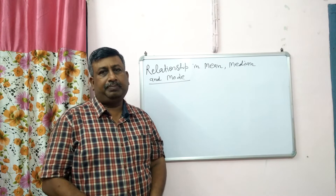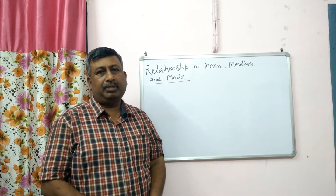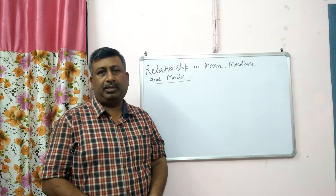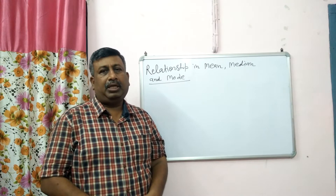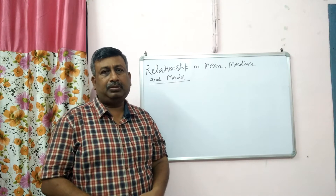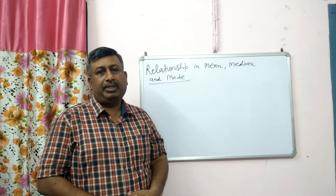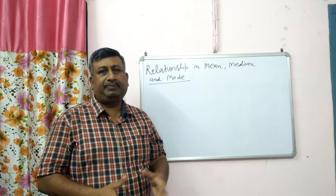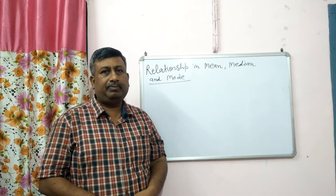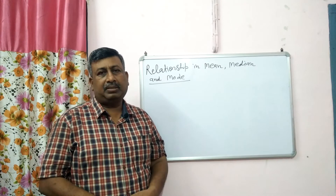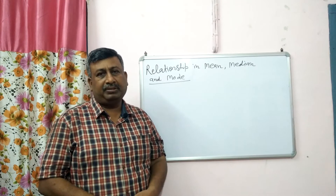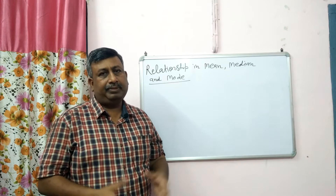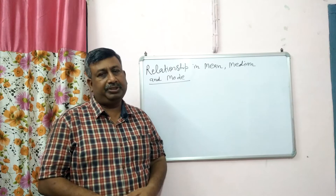Generally, a relationship is asked among mean, median, and mode. These median and mode are measures of central tendency, and we use these three parameters to get the average of a data. It is frequently used in statistics and commonly questions are asked in competitive examinations. So how we can calculate mean, median, and mode with the relationship?